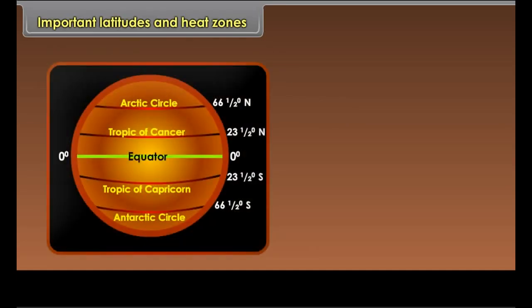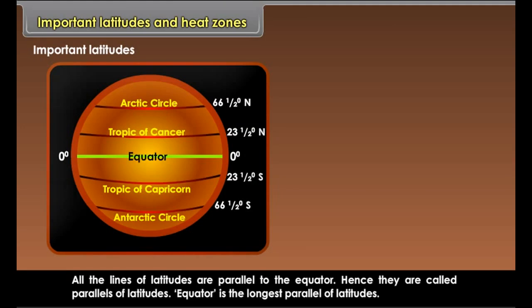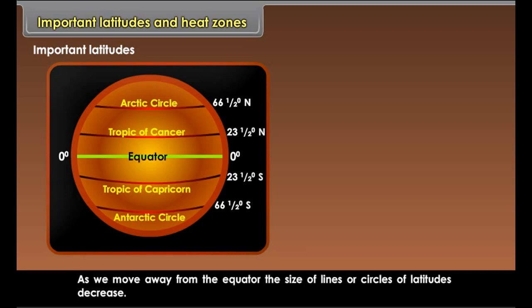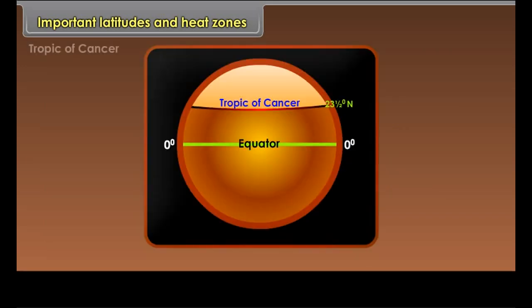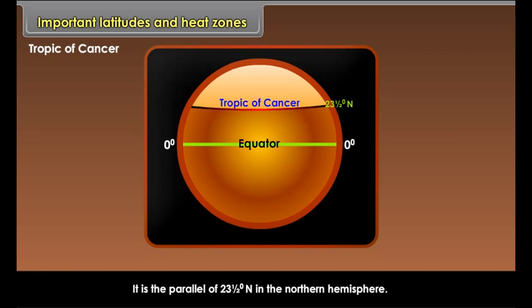Important latitudes and heat zones: All the lines of latitudes are parallel to the equator, hence they are called parallels of latitudes. The equator is the longest parallel of latitudes. As we move away from the equator, the size of circles of latitudes decrease. The important parallels of latitudes apart from the equator are: Tropic of Cancer, Tropic of Capricorn, Arctic Circle, and Antarctic Circle. Tropic of Cancer is the parallel of 23 and a half degrees north.